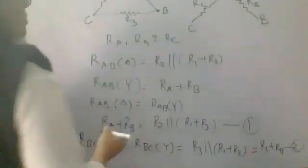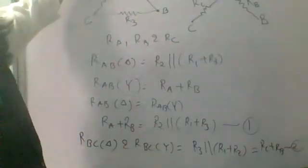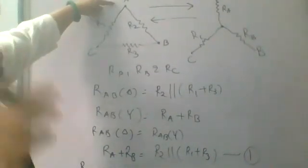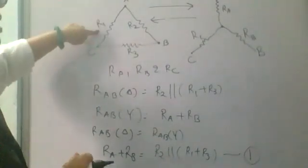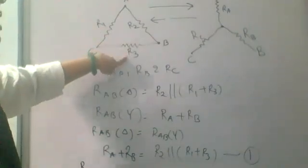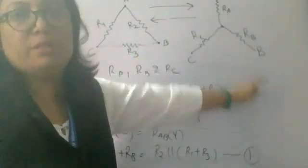Now equation 3. The resistance between terminals C and A - RCA in delta is R1 in parallel with the series combination of R2 and R3. RCA in star is RA plus RC.